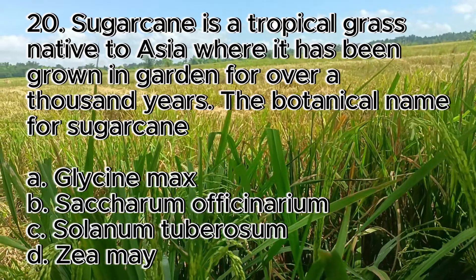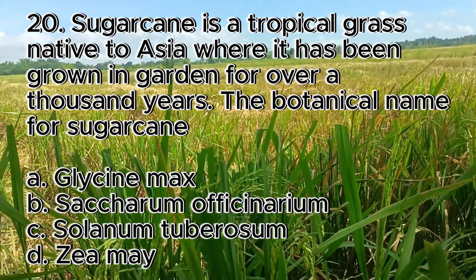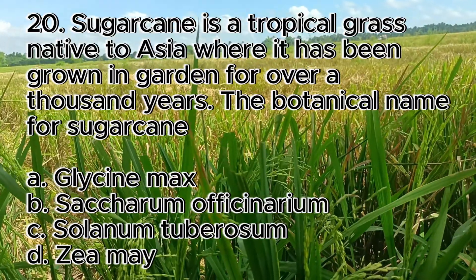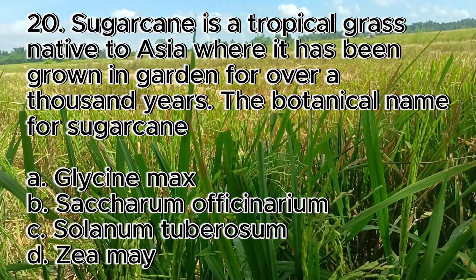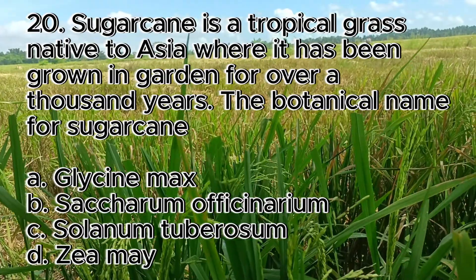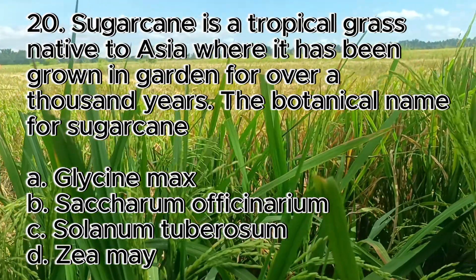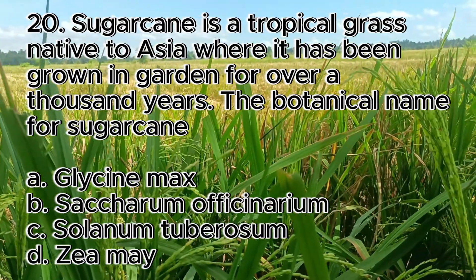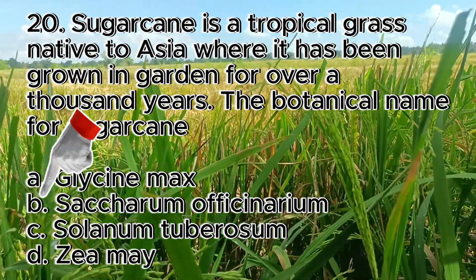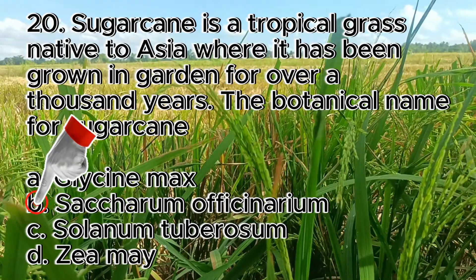Number 20. Sugarcane is a tropical grass native to Asia where it has been grown for over a thousand years. The botanical name for sugarcane: A. Glycine max, B. Saccharum officinarum, C. Solanum tuberosum, D. Zea mays. The answer is letter B, Saccharum officinarum.